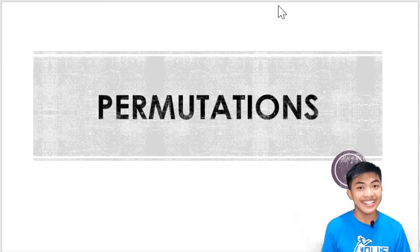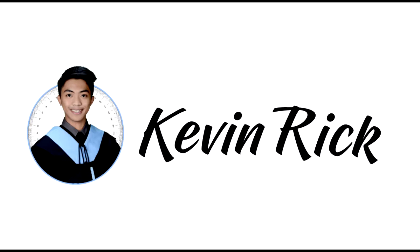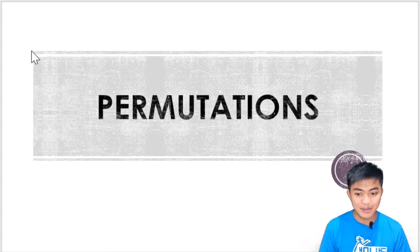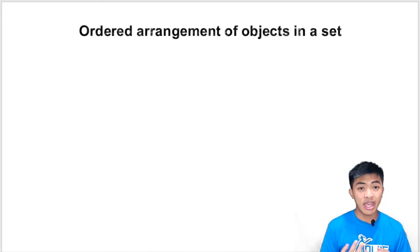Hey there guys, welcome again. In this video we'll be talking about permutations. What is permutation? Permutation is the ordered arrangement of objects in a set. So kung binigyan ka ng problem and it requires you to arrange objects or count the number of arrangements, that is a permutation problem. But may iba't ibang uri ng formula na pwede natin gamitin to answer permutation problems, kasi depende yan sa situation.